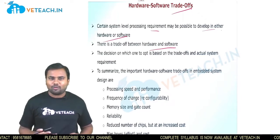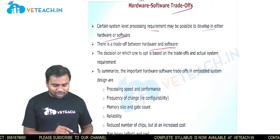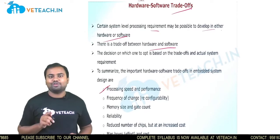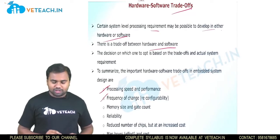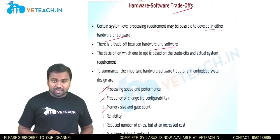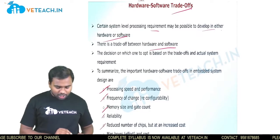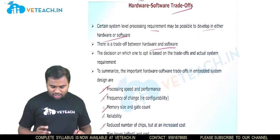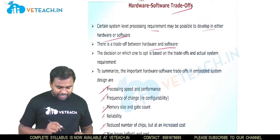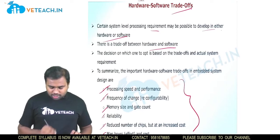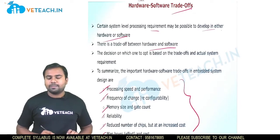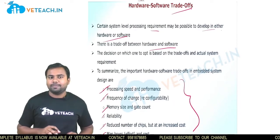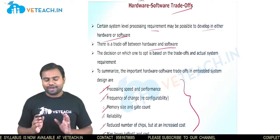The important contents of the hardware-software trade-off are: processing speed and performance, frequency of change, memory size and gate count, reliability, reduced number of chips, and cost. The cost must be kept low, along with manpower cost. These are the main components we need to remember in the hardware-software trade-off.